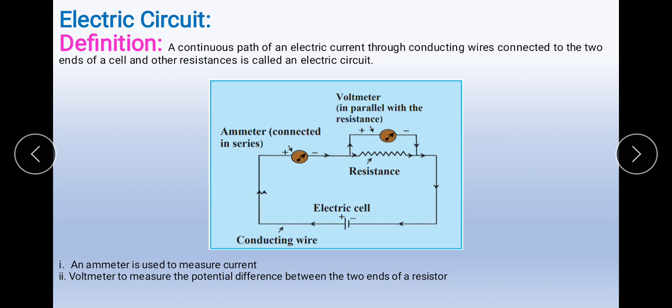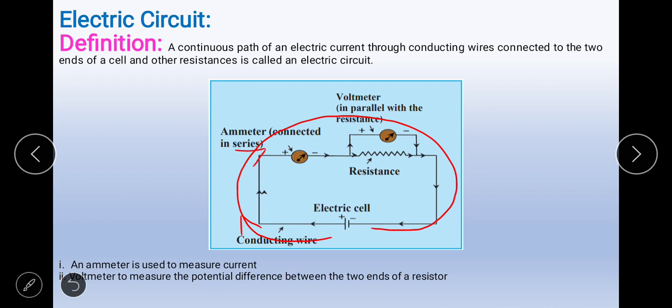Because of this potential difference, the current will flow in the electric circuit. Ammeter is used to measure the current; voltmeter is used to measure the potential difference between the two ends of a resistor. Remember, the current is flowing from positive potential to the negative potential, and the current always follows the low resistance path — wherever there is less resistance, the current will flow through that point.